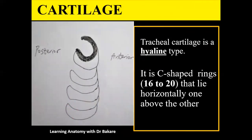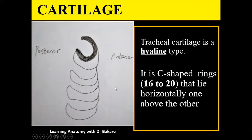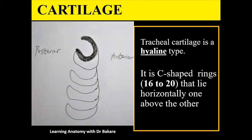The cartilages are C-shaped, meaning they are deficient at the back. We need about 16 to 20 of them to build the trachea, and they are of the hyaline type. They are stacked one on top of each other, with the closed end placed anteriorly and the open end placed posteriorly. This is why, during physical examination, you can feel the closed end of the C-ring cartilages in the anterior midline of the neck.